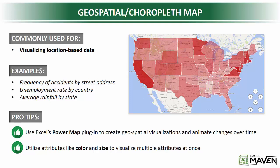That could be locations defined by zip codes, cities, states, countries, etc. Examples include frequency of accidents by street address, unemployment rate by country, and average rainfall by state. All of these examples are location-based and geospatial in nature.